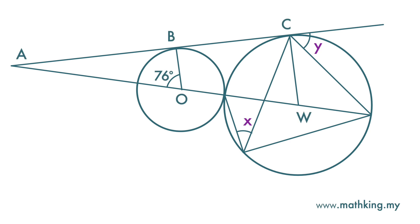We want to find X and Y. First, the angle at center W here equals the angle here at O. It is also 76 degrees.